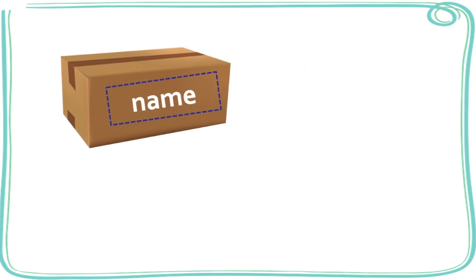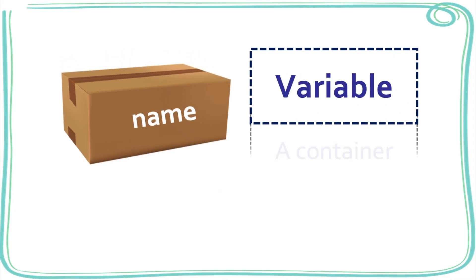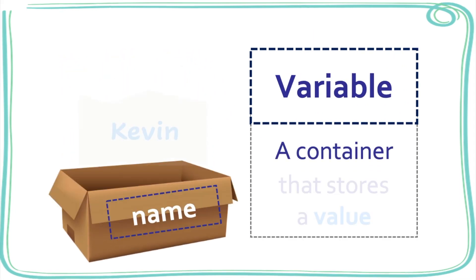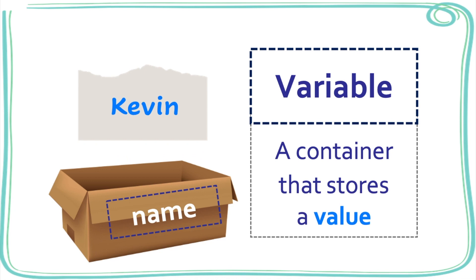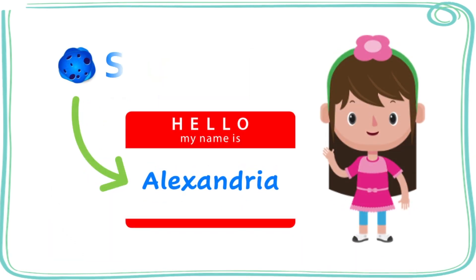The brain box I mentioned acts just like a variable. In programming, a variable is like a container that stores a value. The value in this example is a string of letters that together help you identify someone. In coding, a name is what we call a string.